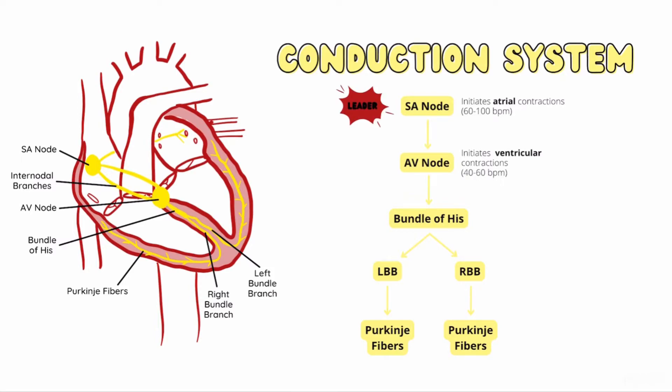Therefore, if the SA node fails, the AV node may initiate ventricular contraction, albeit at a slower rate. It's also worth noting that the nervous system can cause acute changes in heart rate. For example, the sympathetic nervous system speeds up your heart rate while you work out. However, this nervous system input is not required for the heart to beat at baseline.